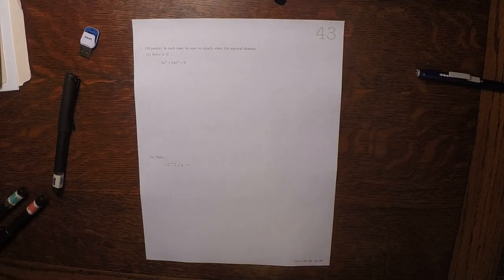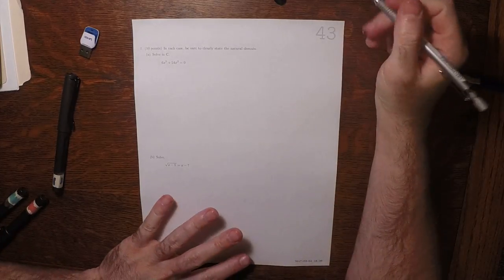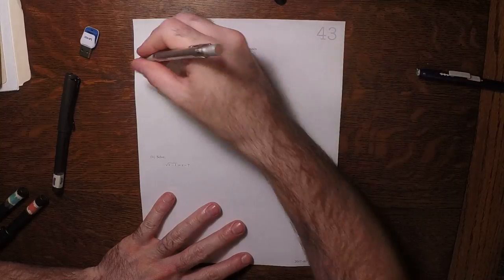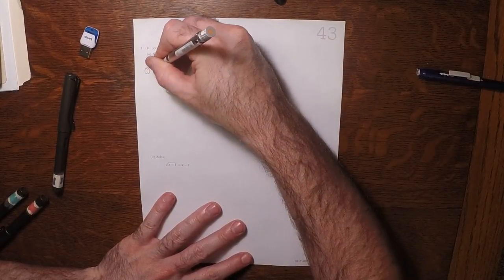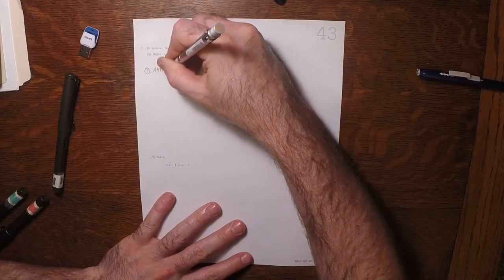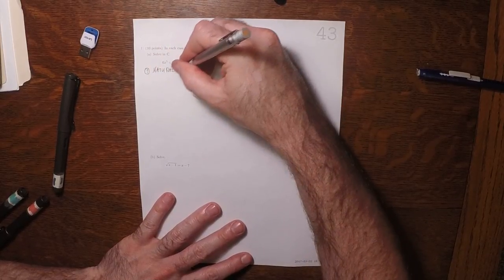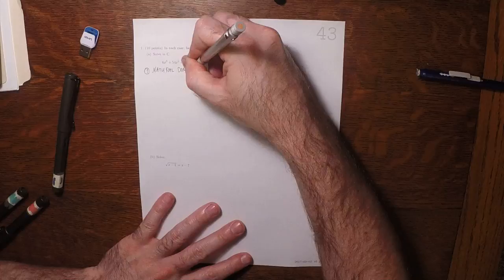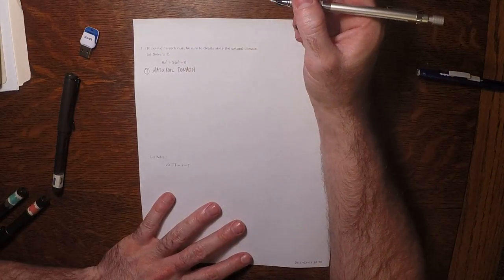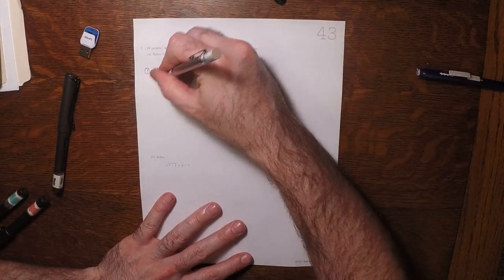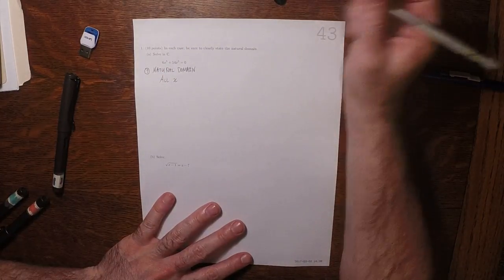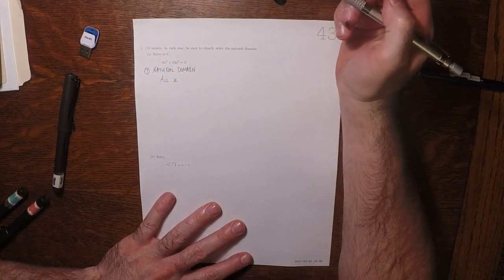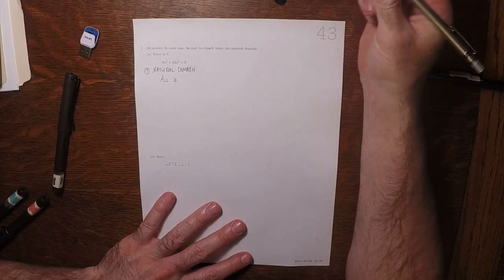This is the solution to written homework 43. In the first place, the natural domain is all x because that's just a polynomial. There's no divisions, no radicals, so there's nothing that could go wrong.